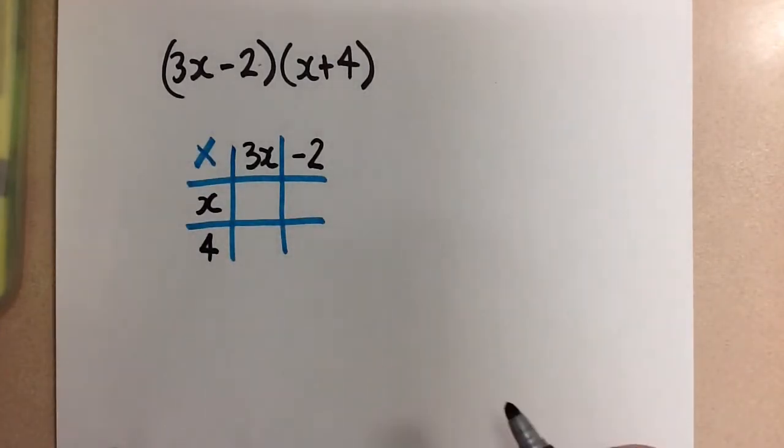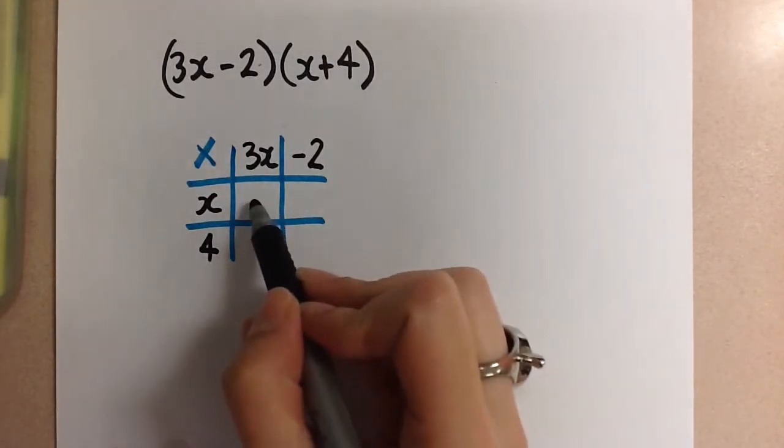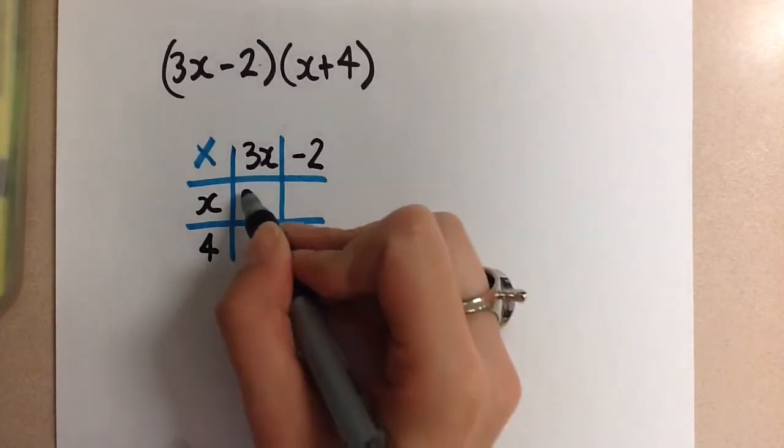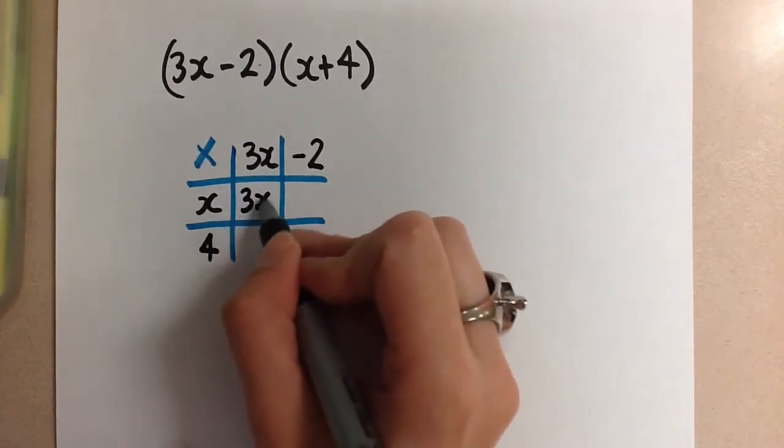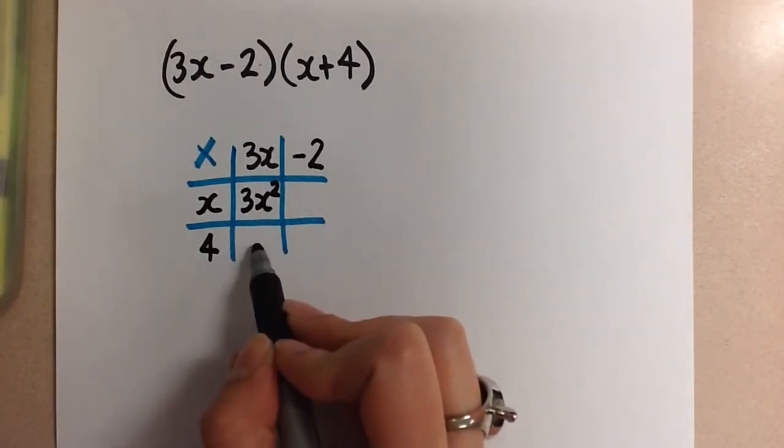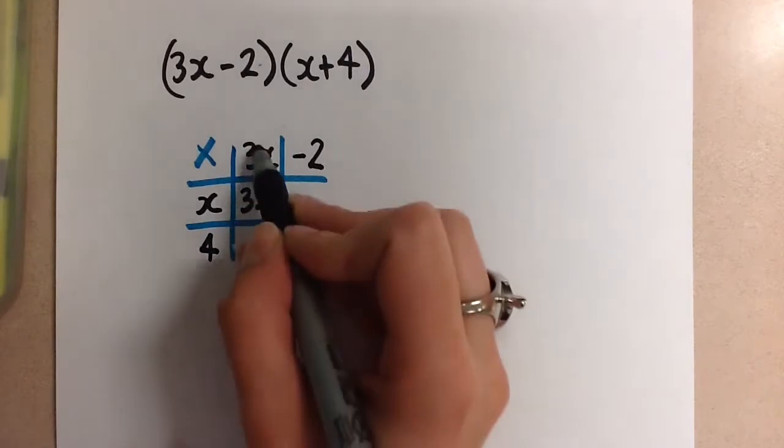So now we're going to go ahead with the multiplication. In this box, we multiply x times 3x, and we get 3x squared. In this box, we multiply 4 with 3x, and we get 12x.